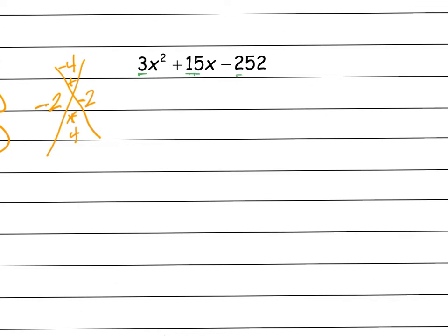3, 15, and 252. So I'm pretty sure 3 goes into 252. Let's just get our calculator out and figure that out really quick. 252 divided by 3. Yes, it does. 84 times. So I'm going to factor out a 3. So I've got x squared plus 5x minus 84.